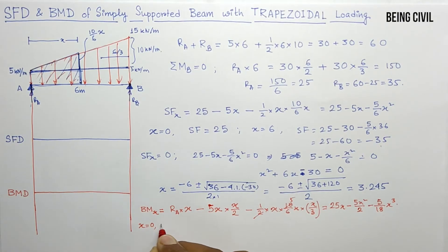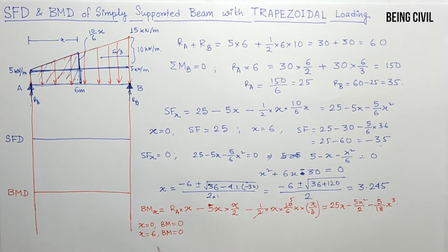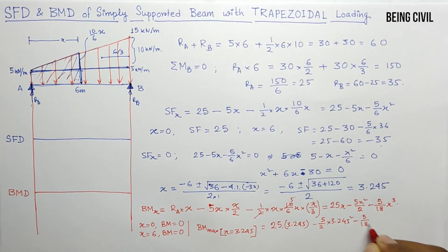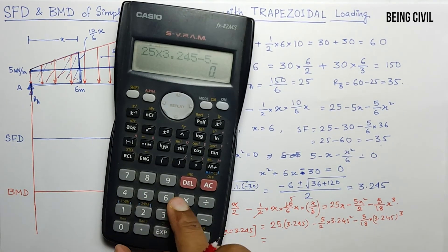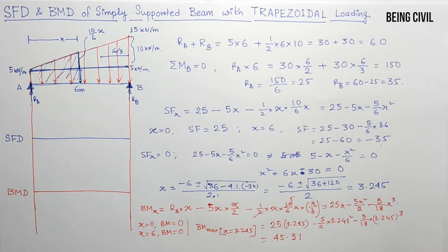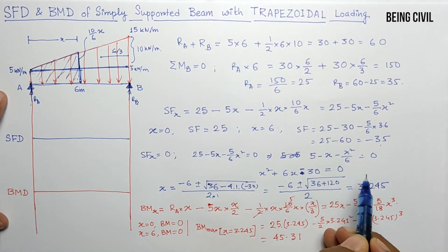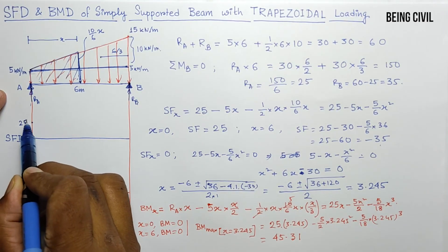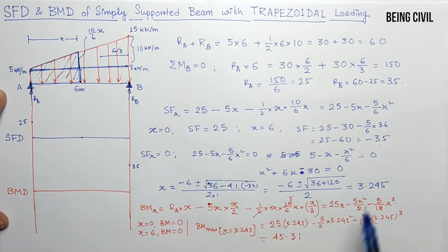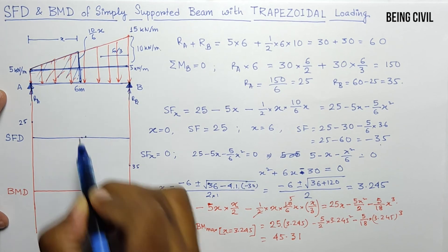At x = 0, the bending moment is 0, and at x = 6, the bending moment is also 0. The maximum bending moment occurs at x = 3.245 m and equals 45.31 kN·m. The shear force diagram is parabolic: it starts at +25 at point A, passes through zero at x = 3.245 m, and ends at −35 at point B.